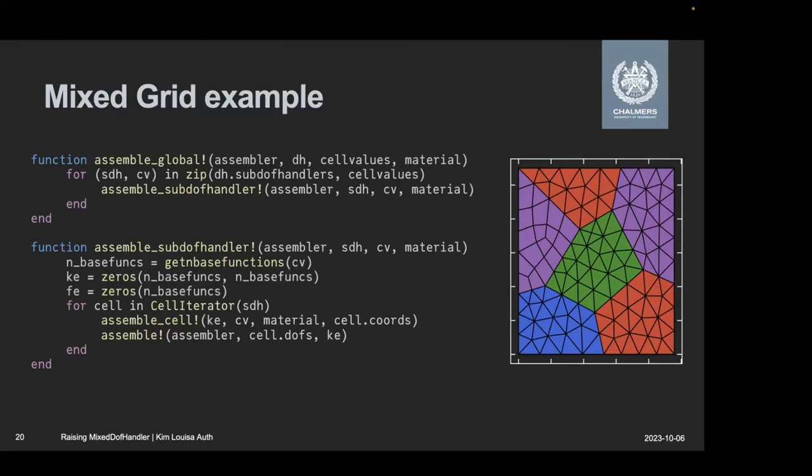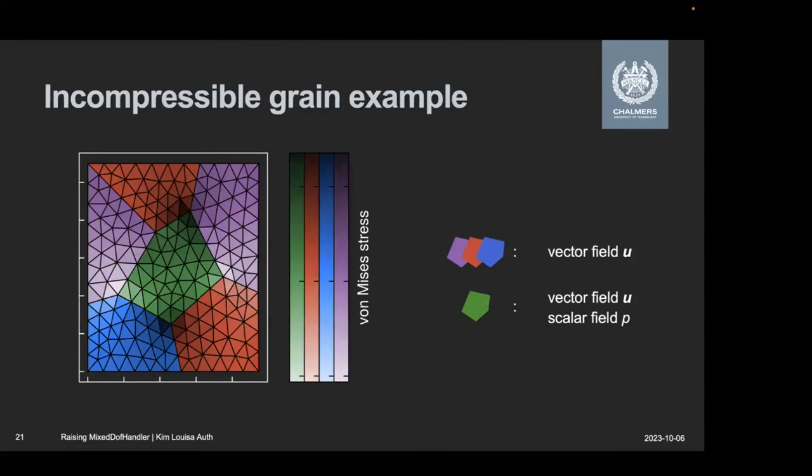You can come up with different architecture for this code, and it's probably going to be fine as well. Then I have a second example, the one where I made the central grain incompressible, but now it's all triangles.